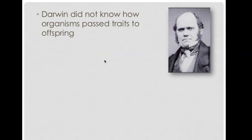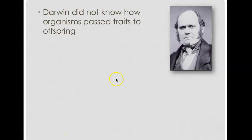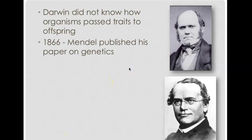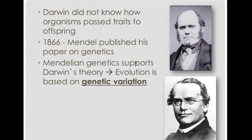It's important to know that Darwin came before Mendel. Even though Darwin came up with a great definition of natural selection, he did not know exactly how traits were passed down to offspring. Then Mendel came and kind of completed Darwin's idea. Mendel said something very important: evolution is based on genetic variation. Go ahead and write the words 'genetic variation' in that blank.